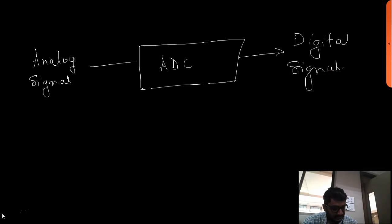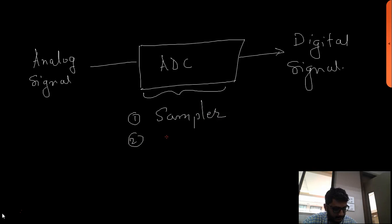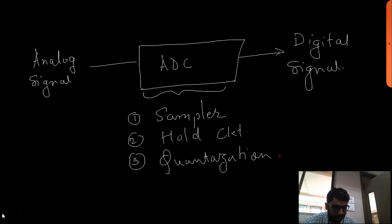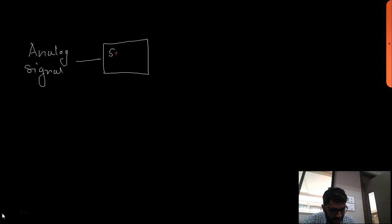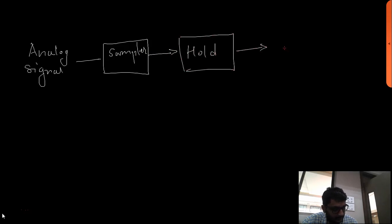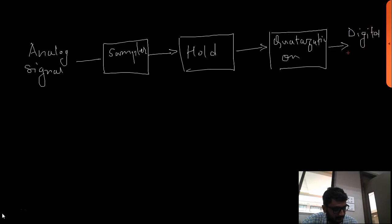This A-to-D converter will have three blocks: first is the sampler, second is the hold circuit, and third is the quantization block. The block diagram will look like this: analog signal goes into the sampler, then into the hold circuit, then into the quantization block, and the output will be a digital signal.